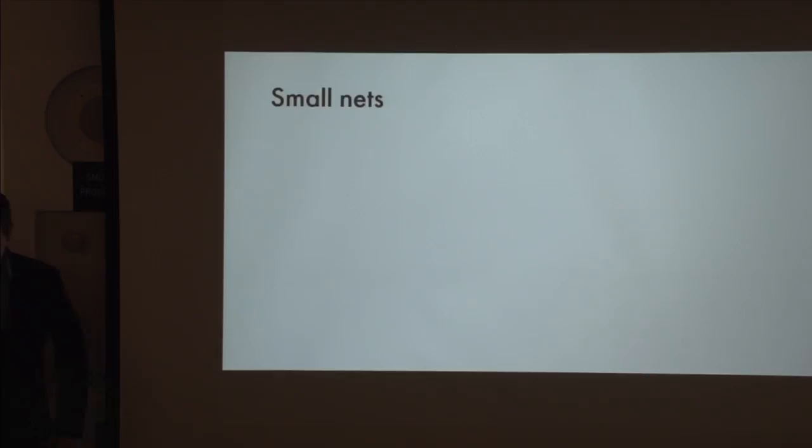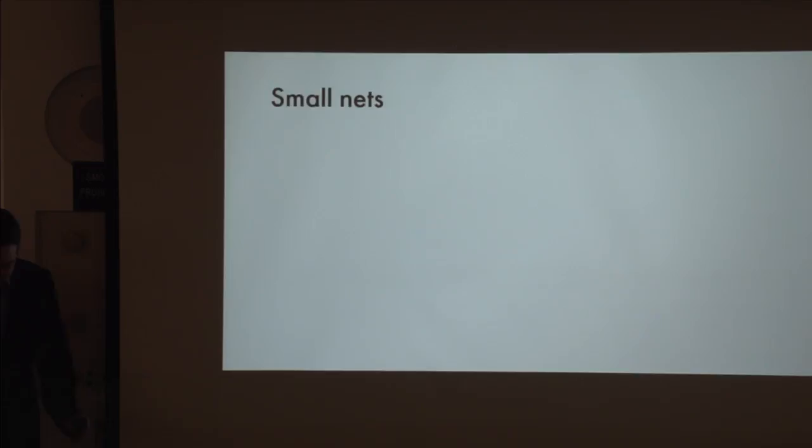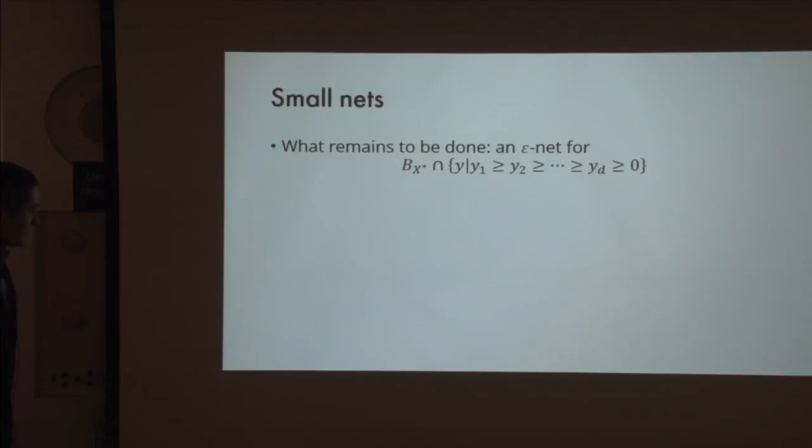Let's see how to compute a small epsilon-net of polynomial size. This is exactly where the outside collaborator's improvement comes into place—before we had a slightly super-polynomial bound of D^{log log D}, and he improved it to polynomial. For this talk, I'll show quasi-polynomial, which is already non-trivial. Volume bound fails, but we have a simple enough explicit construction.